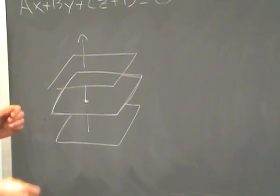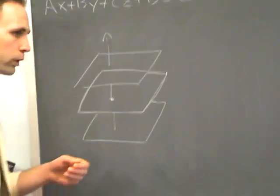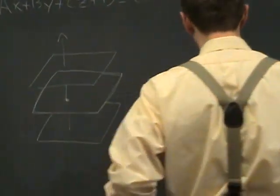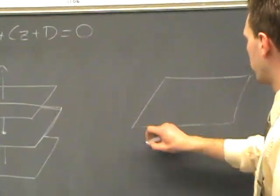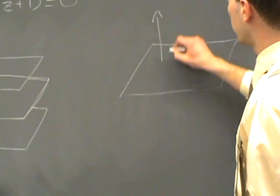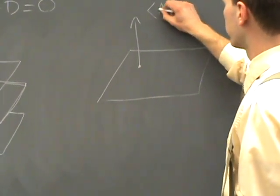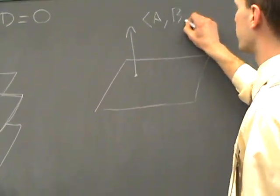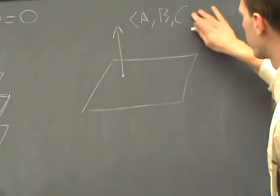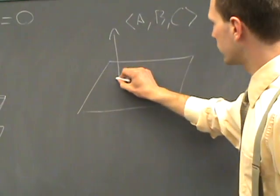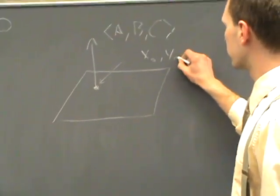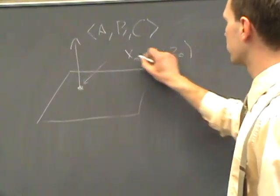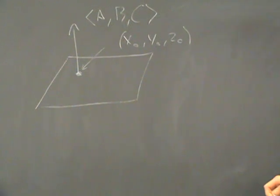So how can we, given a normal vector and a point, determine what the equation of the plane is? Well, let's say we have a plane and a normal vector whose components are A, B, C. And the point that you're given we'll call X0, Y0, Z0. So there's your vector and your given point.